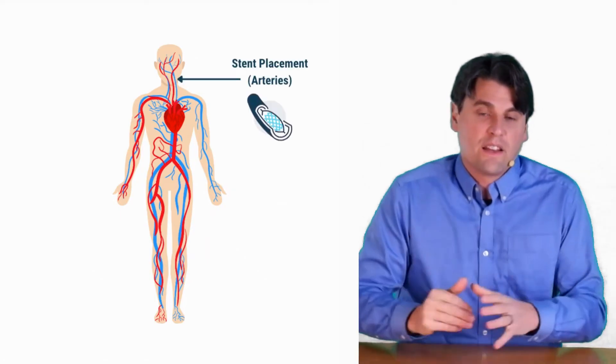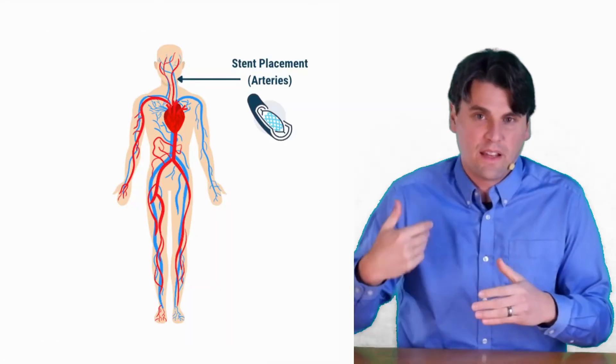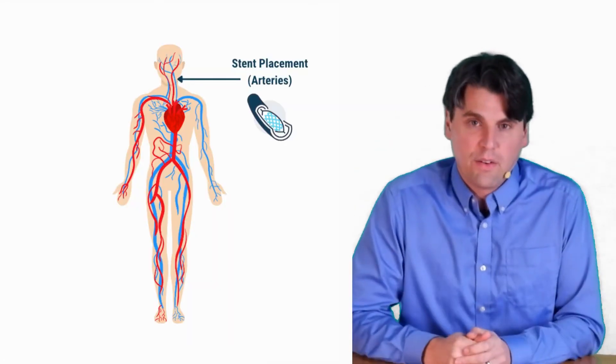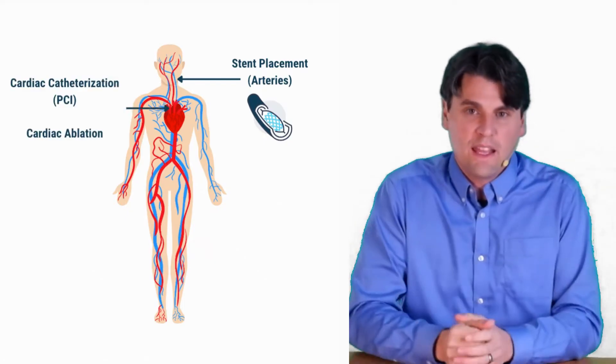Just a few examples here, again, how fluoroscopy is used interventionally. A significant one is for stent placement. So if you're looking at placing stents in vessels, you know, outside of the heart, and then also we'll talk about in the heart.